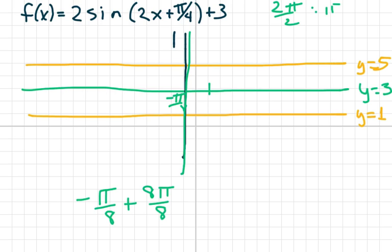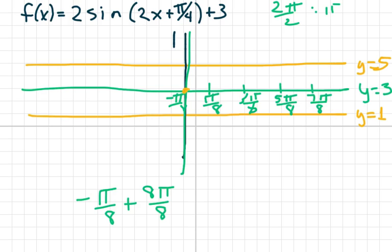So we're going to go: negative pi over 8, then pi over 8, 3 pi over 8, 5 pi over 8, and 7 pi over 8. You need 5 points to draw your sine wave. So I'm going to start at the center — this would be like saying 0, 1, 0, negative 1, 0.